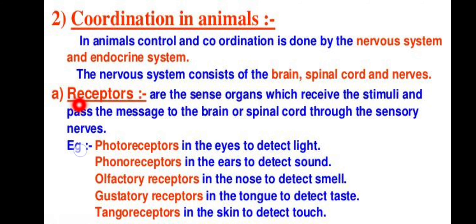What are receptors? Receptors are specialized cells in the sense organs which receive stimuli and pass the message to the brain and spinal cord through the sensory nerves. We have five sense organs: our eyes, nose, tongue, ear, and skin.